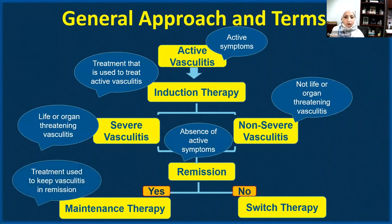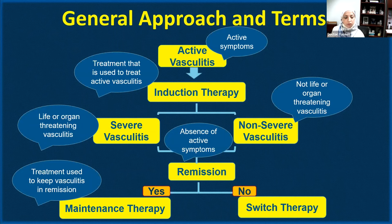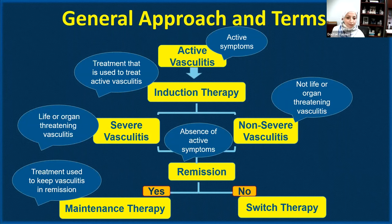After using induction therapy, we reassess the patient after about six months and re-evaluate whether they are in remission or not. If they are in remission, we switch from induction therapy to maintenance therapy — a less aggressive treatment used to keep the vasculitis quiet. In the minority of cases where remission is not achieved, we switch to another medication for induction therapy.